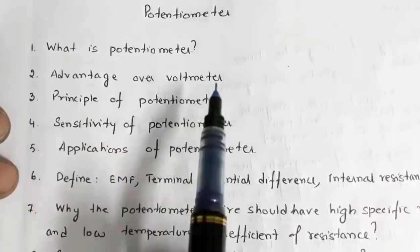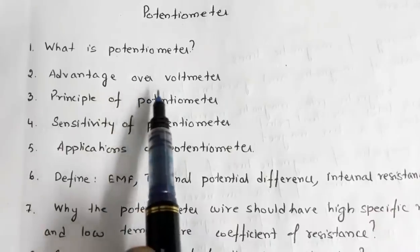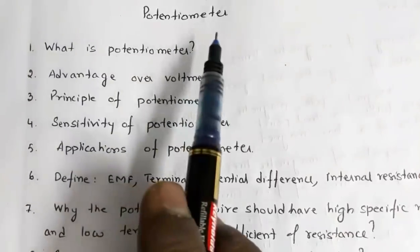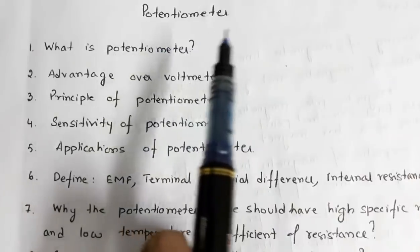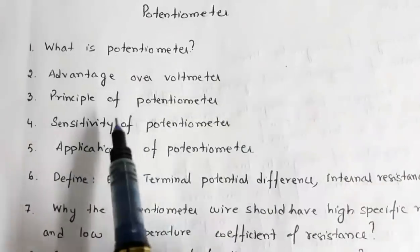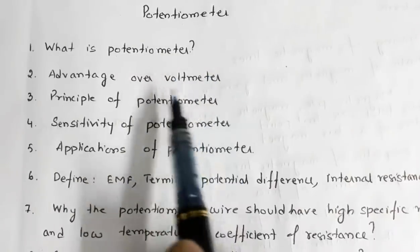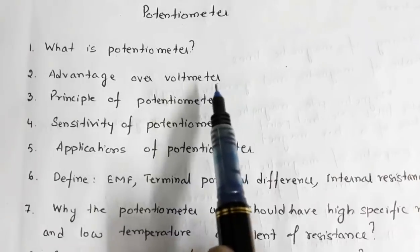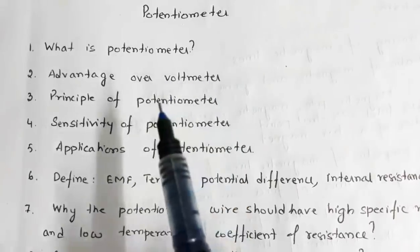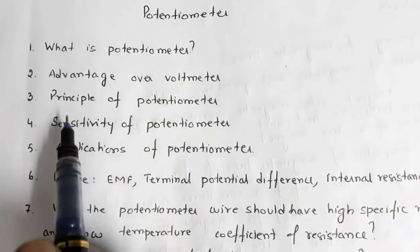What is a potentiometer? A potentiometer is a potential measuring device. What is the advantage of a potentiometer over a voltmeter? Both measure potential, but the advantage is that a potentiometer can measure potential without drawing any current from the circuit. You can use a potentiometer to measure the EMF of a cell, but a voltmeter can only measure the terminal potential difference. Similarly, you can use a potentiometer to measure internal resistance, but not a voltmeter.